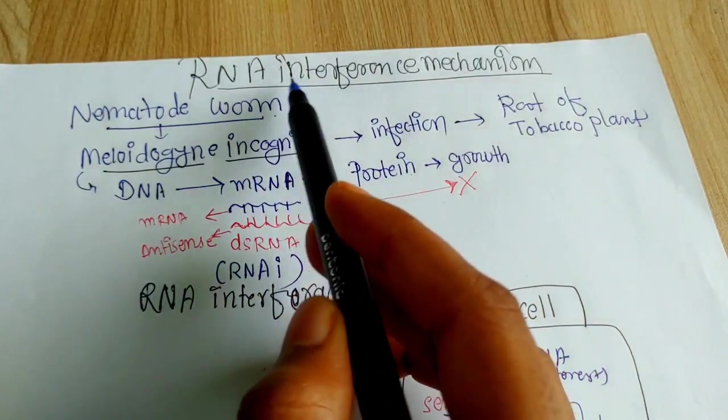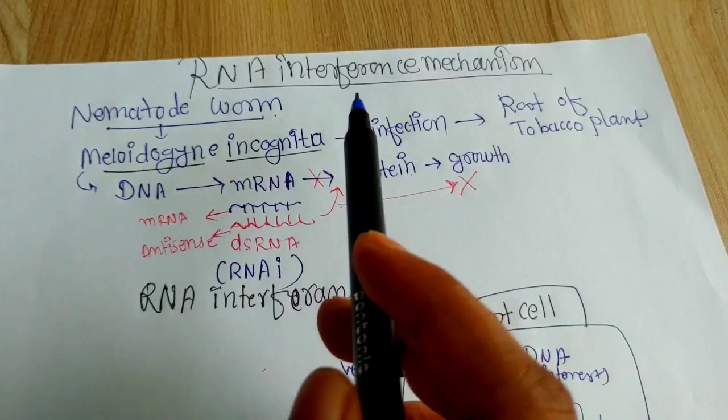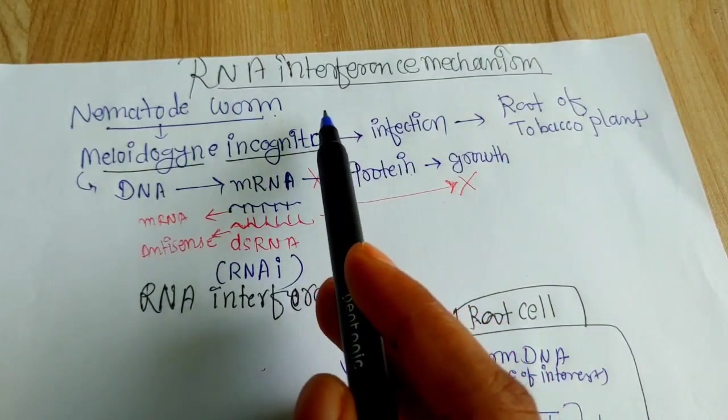Here I am going to discuss the RNA interference mechanism and how this mechanism can be used to create a transgenic tobacco plant.